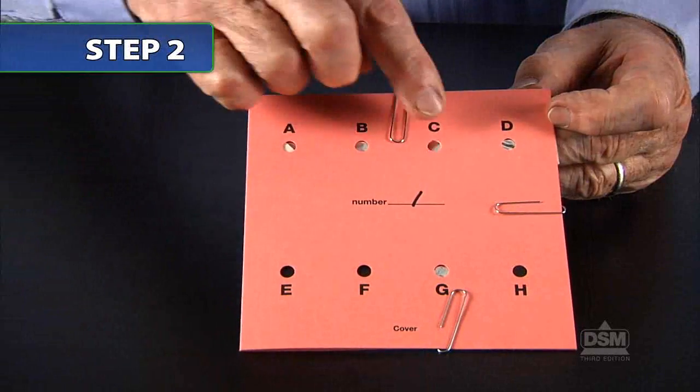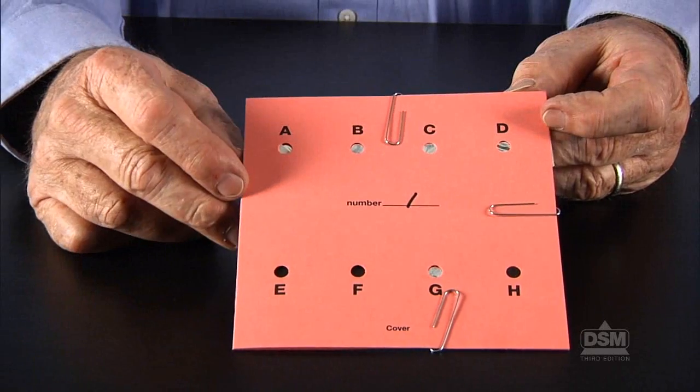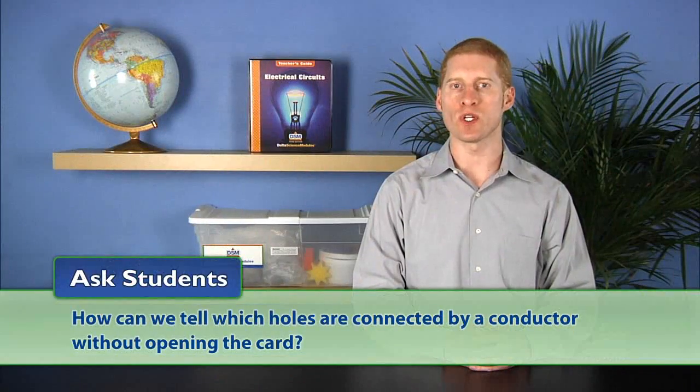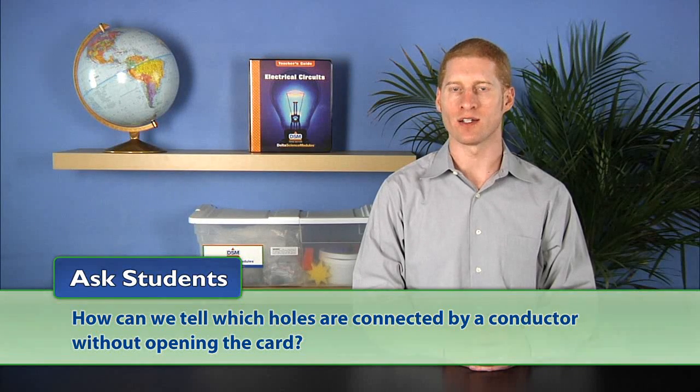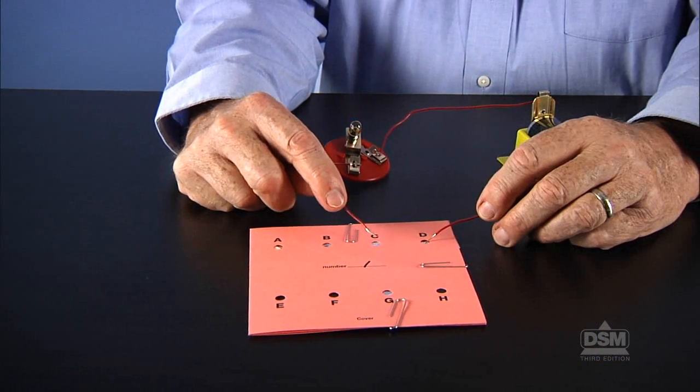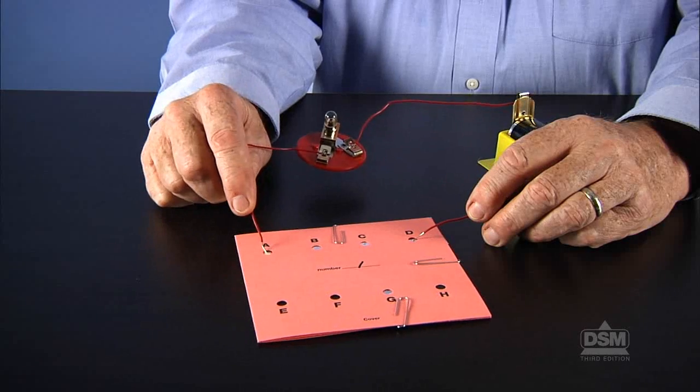Hold up one of the puzzle cards and explain that there are conductors hidden below the cover card and that these conductors connect certain holes. Ask students, how can we tell which holes are connected by a conductor without opening the card? Students may suggest that connecting two holes with two wires from a circuit that has a bulb in it could help them determine which two holes are connected by a conductor.